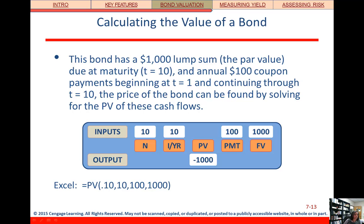Let's start talking about valuation by starting with that bond that we talked about earlier that was selling at face value. Remember we said that when a bond is selling where its price is the same as its par value or face value, then that also means that the coupon rate is equal to the yield to maturity. So that's what's happening here.